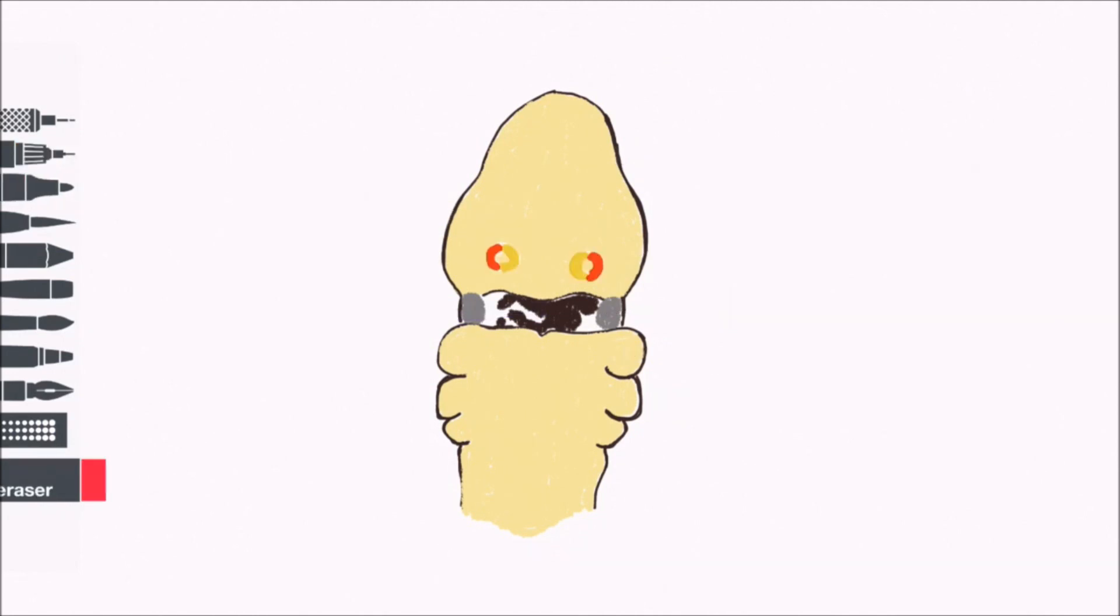Over the next two weeks, the maxillary processes grow medially, growing inferiorly to the lateral nasal prominences until the maxillary processes fuse with the medial nasal prominence. This growth continues, compressing the medial nasal prominences towards the midline until they touch and fuse. The fused medial nasal prominences are called the intermaxillary segment.